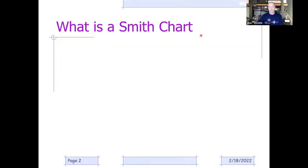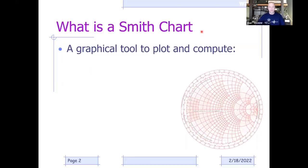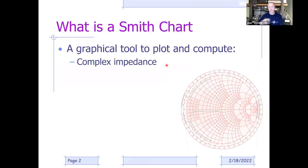What is a Smith chart? It's really a graphical tool that allows you to plot and compute a number of different things. First and foremost, it allows you to plot complex impedance—meaning the real or resistive component as well as the inductive or capacitive component. Any non-resonant device, including an antenna and coax, typically presents a very complex impedance to our transmitter, and that's what we can look at versus frequency.